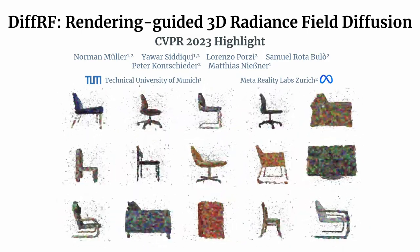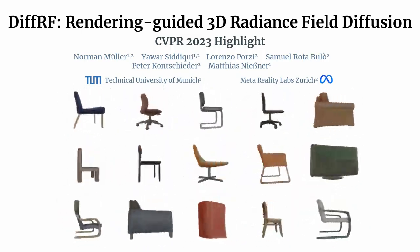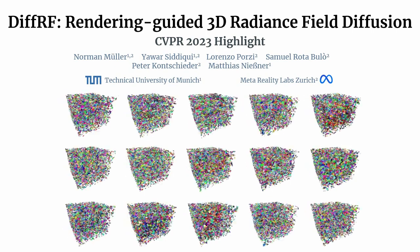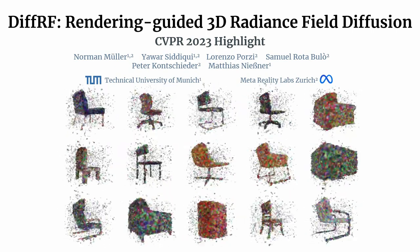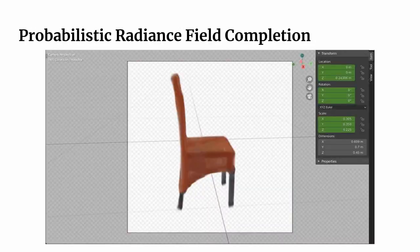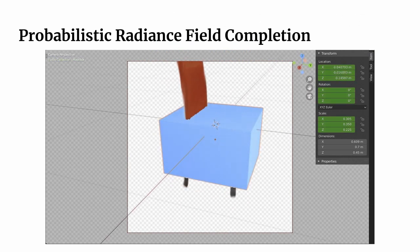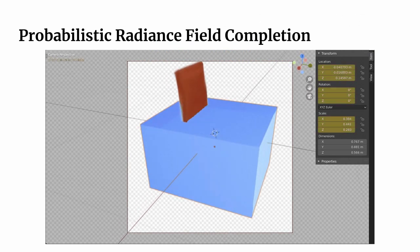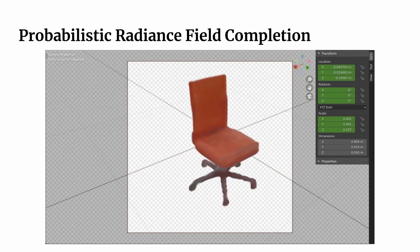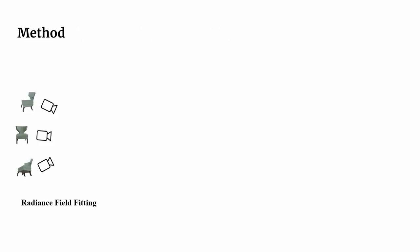We present DIFF-RF, a novel approach for 3D radiance field diffusion with rendering guidance. In contrast to existing diffusion-based methods, we operate directly on radiance fields, enabling unconditional synthesis and novel conditional tasks like masked radiance field completion, using the strong synthesis prior learned by our model.